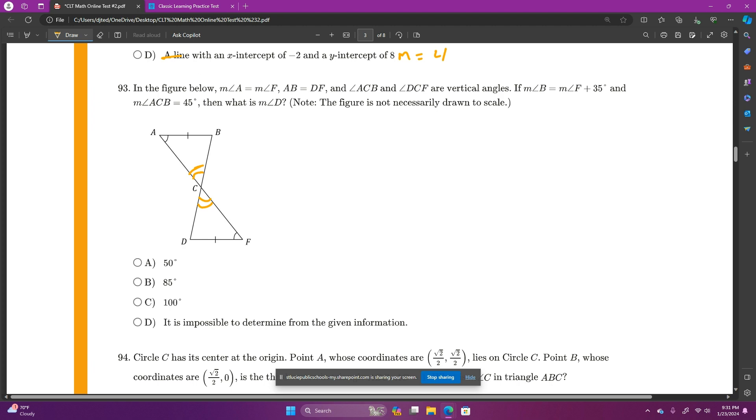Next piece of information says, if the measure of angle B equals the measure of angle F plus 35 degrees. So we need to find out what's the measure of angle F. We'll call that X. Angle B is X plus 35. And the measure of angle ACB is 45. So in there, that's 45 degrees. Then what is the measure of angle D? Measure of angle D is going to be the same as B, because that's the third angle of the triangle, and the other two angles are the same. So X plus 35.